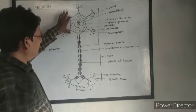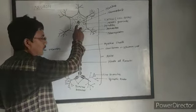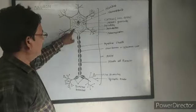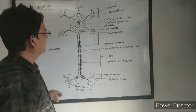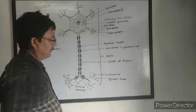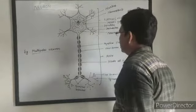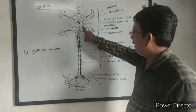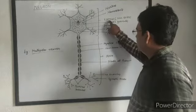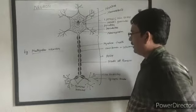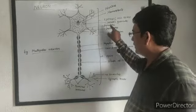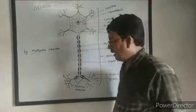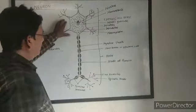In the cell body or cytone, the protoplasm present in the cytone is called neuroplasm. In the neuroplasm, there are several granules present in the cytone, which are called nasal granules. Nasal granules are actually ribosomes. There are also several fibrils in the cytone called neurofibrils. Neurofibrils and nasal granules are the characteristics of neurons — they are not present in all other cells, along with the remaining cell organelles.